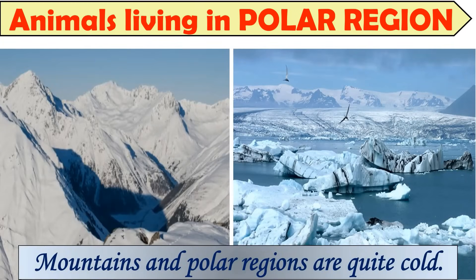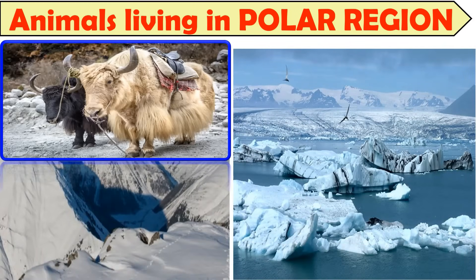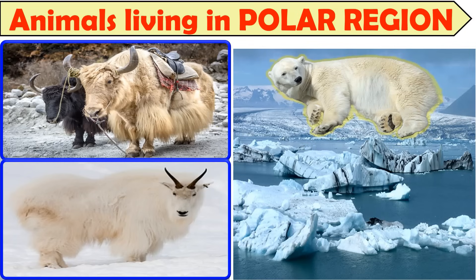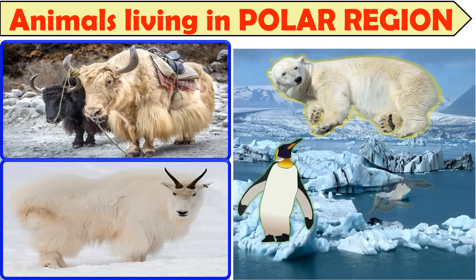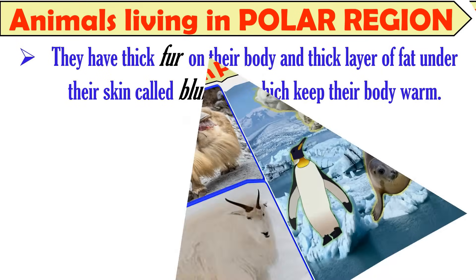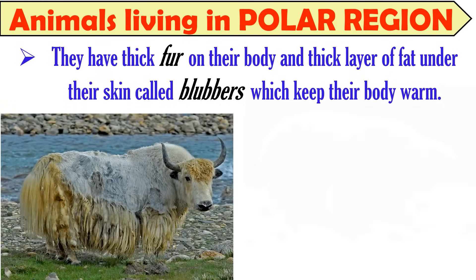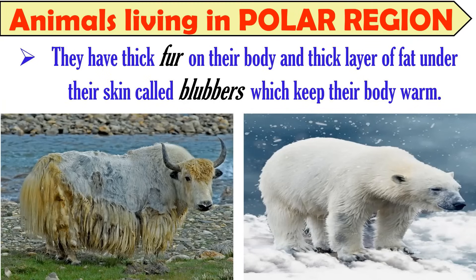Mountains and polar regions are quite cold. Mountain goats and yaks are found on mountains, and animals like polar bears, penguins, and seals live in polar regions. They have thick fur on their bodies to keep them warm. Under their skin, these animals have a thick layer of fat called blubber which keeps their body warm. Thus, these animals have adapted to live in cold climate conditions.